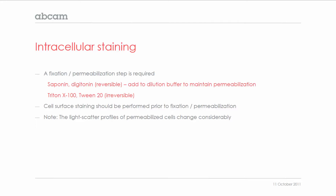For this, either a membrane solubilizer such as saponin or digitonin can be used. As these induce a reversible permeabilization, they should be added to the dilution buffers, which are subsequently used to maintain the permeabilization of the cell.